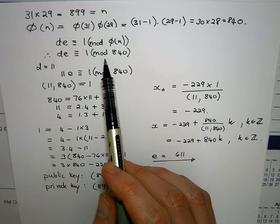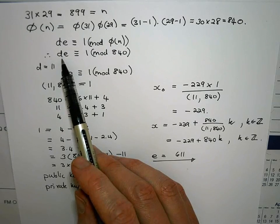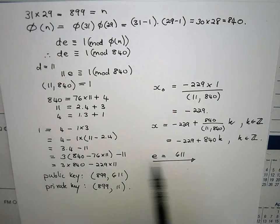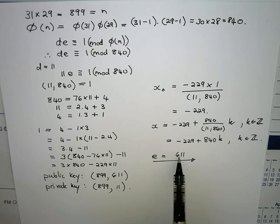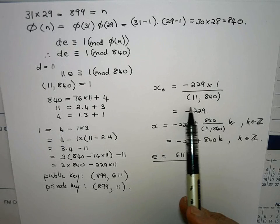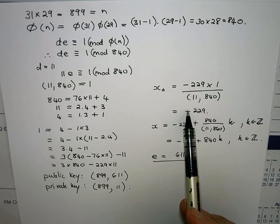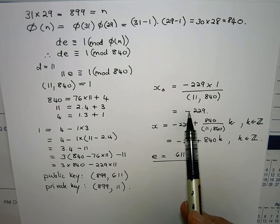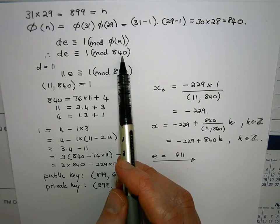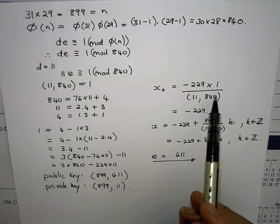And then I went and set up this congruence and I followed the usual procedure of solving a linear congruence. I got a specific solution. If this specific solution had been within the bounds that I wanted, in other words something non-negative and less than φ(n), non-negative and less than 840, I would have taken just that.